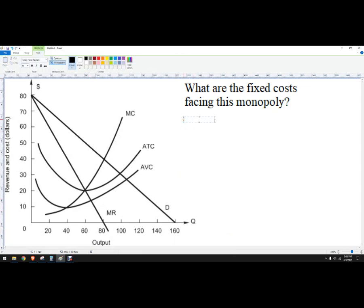So to calculate the fixed costs, we need to know what the total costs are. And we find that by adding variable costs to fixed costs.